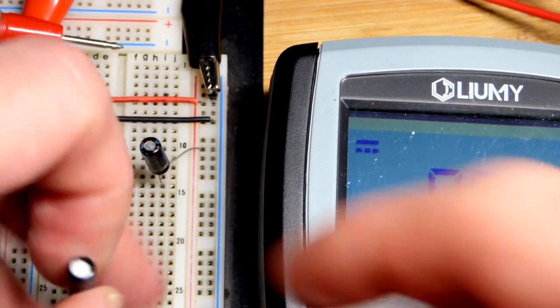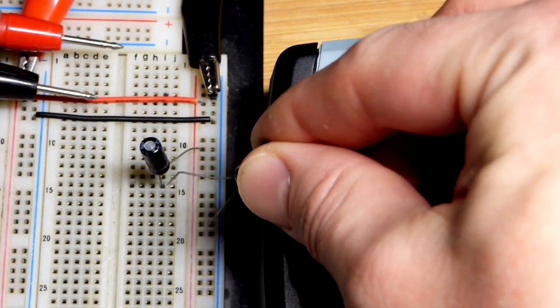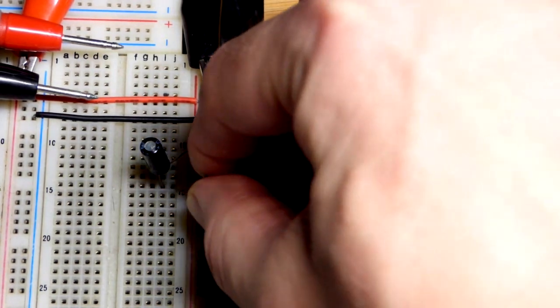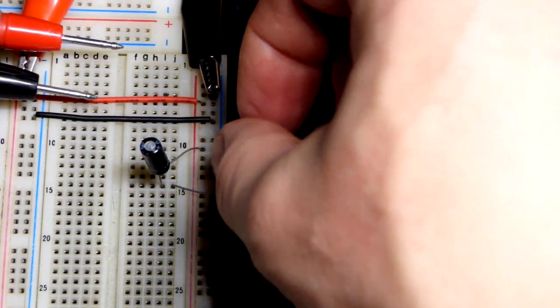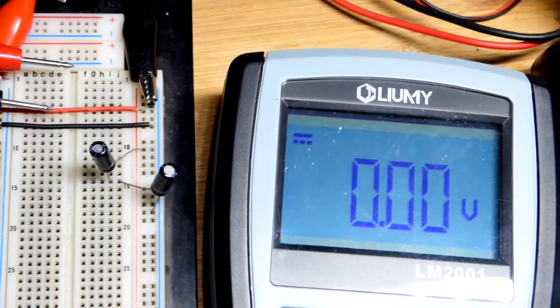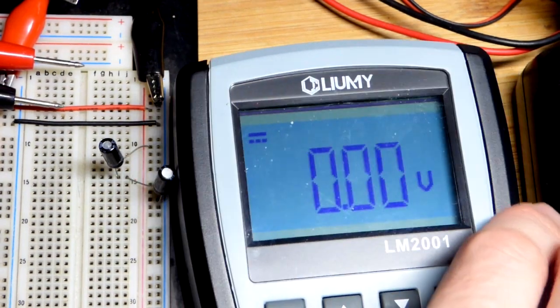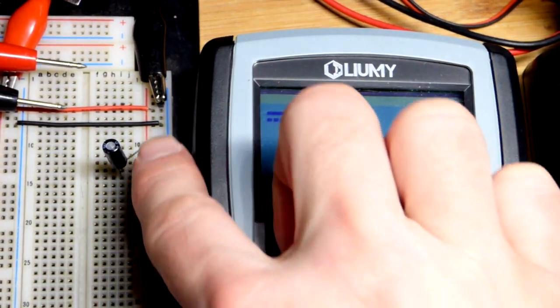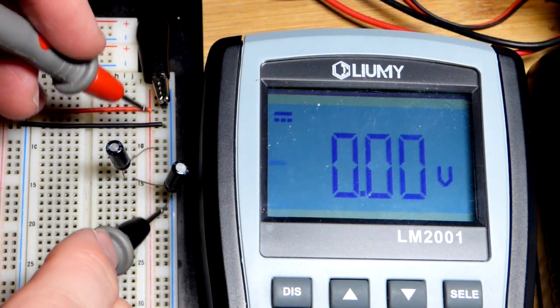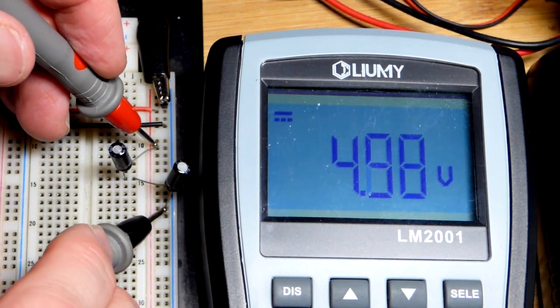So they were both mostly discharged. Maybe the multimeter does power them a bit while it is checking their capacitance, so they may have had a voltage on them. Ideally they would have no voltage, but let's look at the voltage across the two of them, and you can see that it's five volts right there.